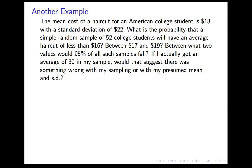Let's do another example. The mean cost of a haircut for an American college student is $18, with a standard deviation of $22. What's the probability that a simple random sample of 52 college students will have an average haircut cost of less than $16? How about between $17 and $19? Between what two values would 95% of all such samples fall? And finally: if I actually got an average of $30 in my sample, would that suggest something was wrong with my sampling or with the presumed mean and standard deviation?